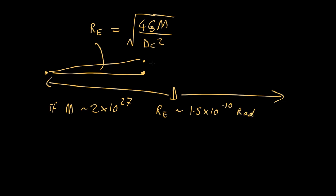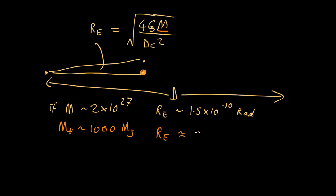But in this case, the mass we want is not the mass of the planet but the mass of the star. The mass of the star is about a thousand times the mass of Jupiter. Since mass is under the square root, the new Einstein radius is going to be the square root of a thousand times bigger than the old one. The square root of a thousand is roughly 30, so it's about 5×10⁻⁹ radians.